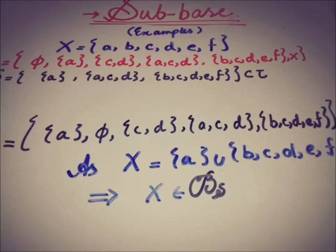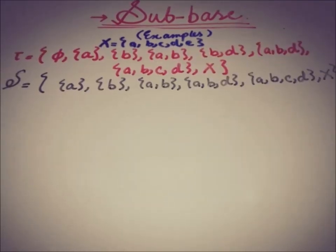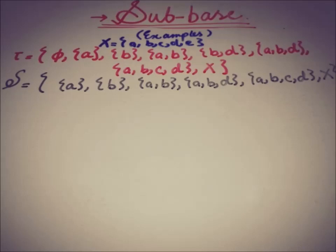Moving to another example: we have a set X containing elements A, B, C, D, E, F, and a topology tau, and a sub-collection S of tau containing certain elements. Proceeding in the same way, we take finite intersections of elements of S and form the set B_s.